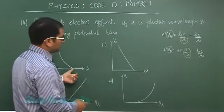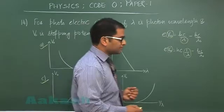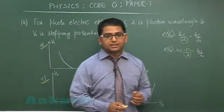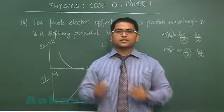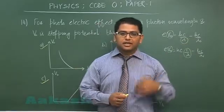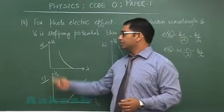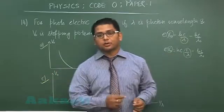At lambda equals lambda_naught, the value of stopping potential becomes 0. Or else if you want to be certain enough, go for the first derivative and second derivative. Using all these concepts of graph transformation and graph formation, you would be correctly landing to option number A.